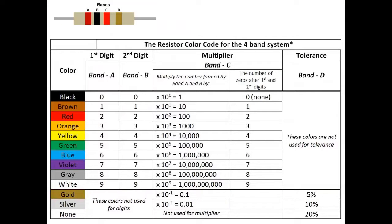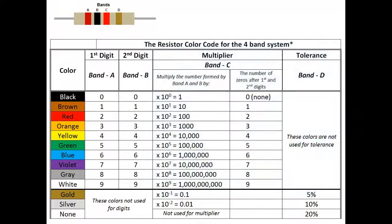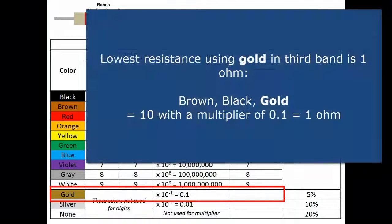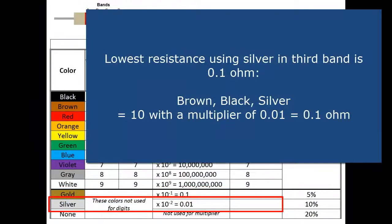One of the problems with the conventional colors, black through white, in the color code system is that the lowest resistance you can represent is 10 ohms, and that would be brown, black, black (1-0 with no zeros afterwards, or 10 times 1). If the third band is gold, that allows you to go down to a 0.1 multiplier, which means your lowest resistance can be 1 ohm. With silver, it can go all the way down to 0.1 ohm. Occasionally you'll see that in low value resistors.